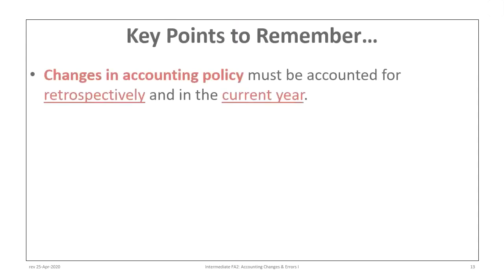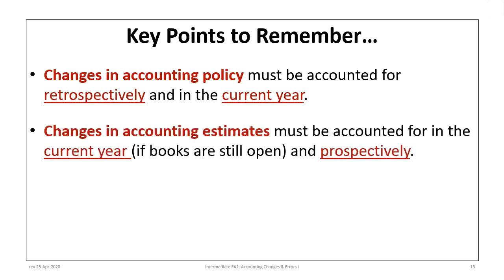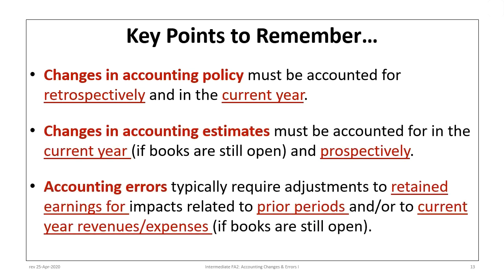Key points to remember: changes in accounting policy must be accounted for retrospectively in the current year. Changes in accounting estimates must be accounted for in the current year if the books are still open, and prospectively going forward. Accounting errors typically require adjustments to retained earnings for prior year impacts and to current year revenues and expenses if the books are still open. The key technique is to draw a timeline, separate prior years from the current year, determine what can still be fixed, and adjust only retained earnings for errors made in closed prior years.